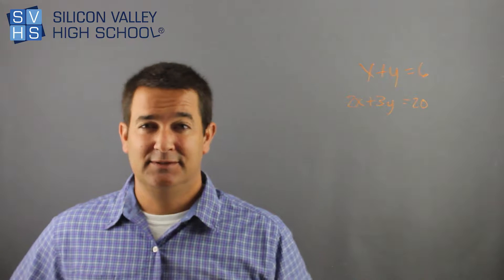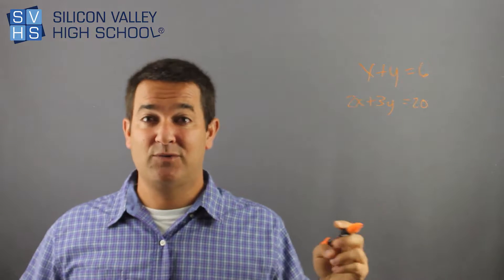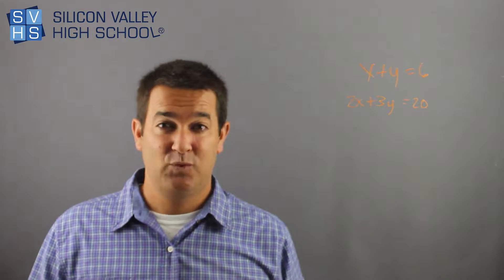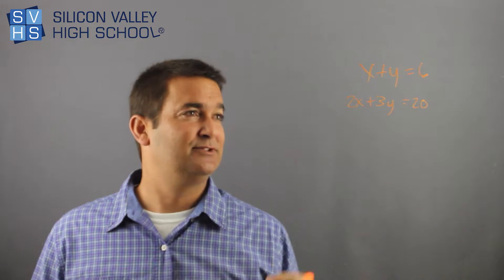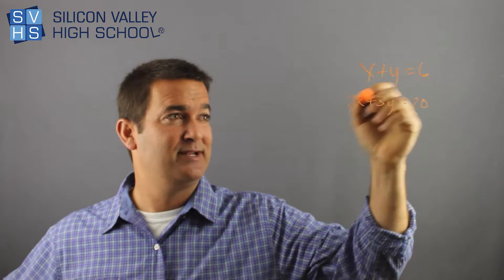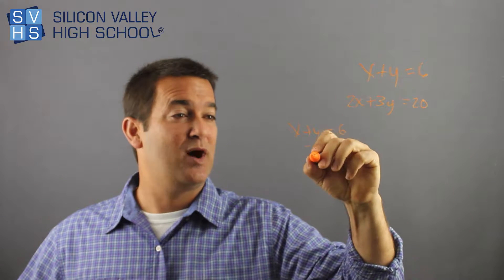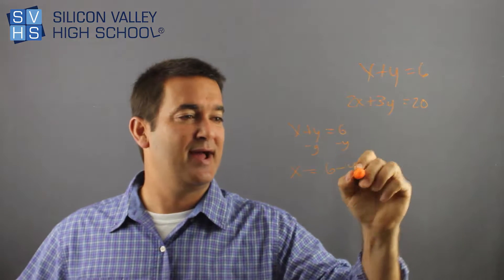And which one? I'm looking to you for guidance, Ryan. Which letter should I get alone? It doesn't even matter. Whichever one's easier, and in this case, it's a tie. I'll get x alone, just because that's cool. I could have got y alone and plugged it in for y. It doesn't matter. I'm going to get x alone. x plus y equals 6. To get x alone, I'm going to get this y out of here. So I have x equals 6 minus y.